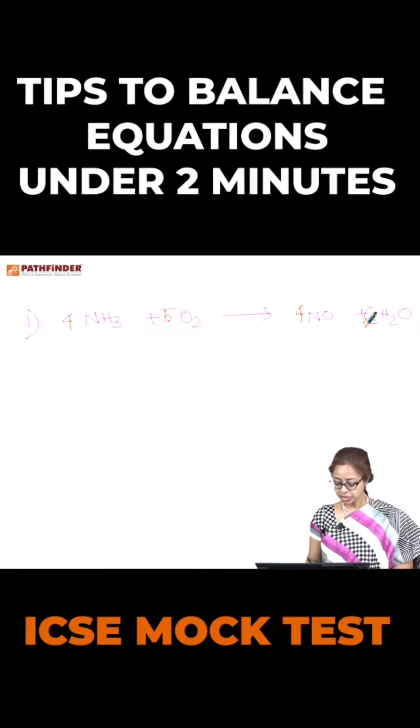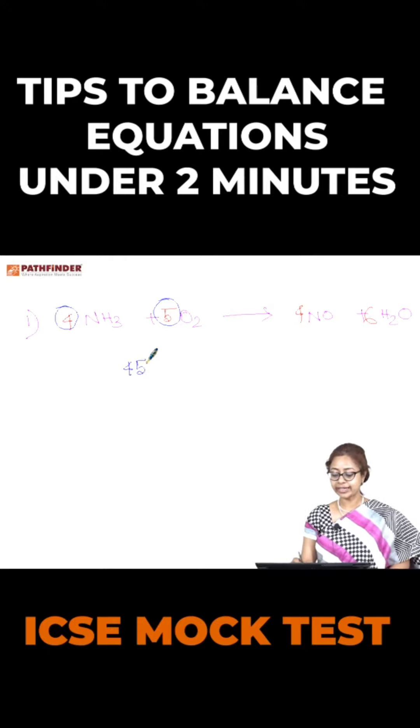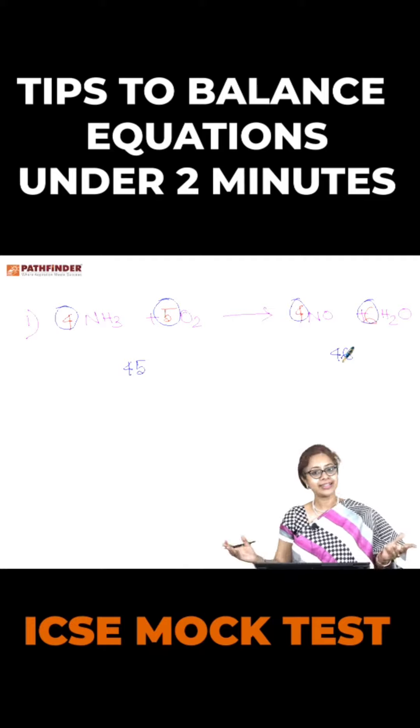Now if you pick up the first two values, 4 and 5, that makes the number 45. And if you take 4 and 6, that makes 46. Isn't it simple?